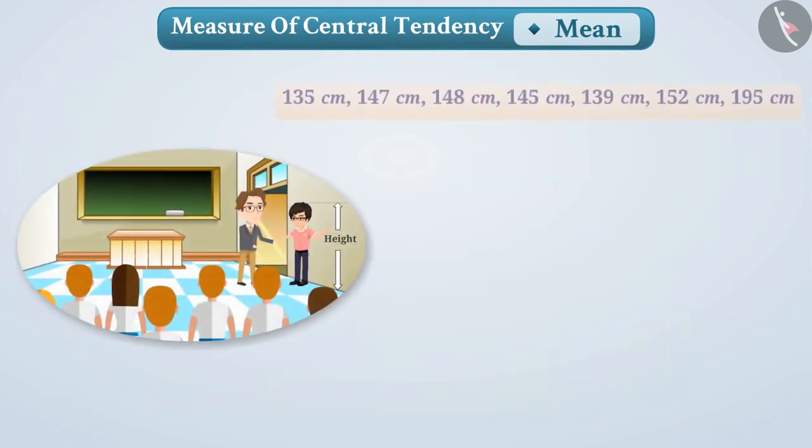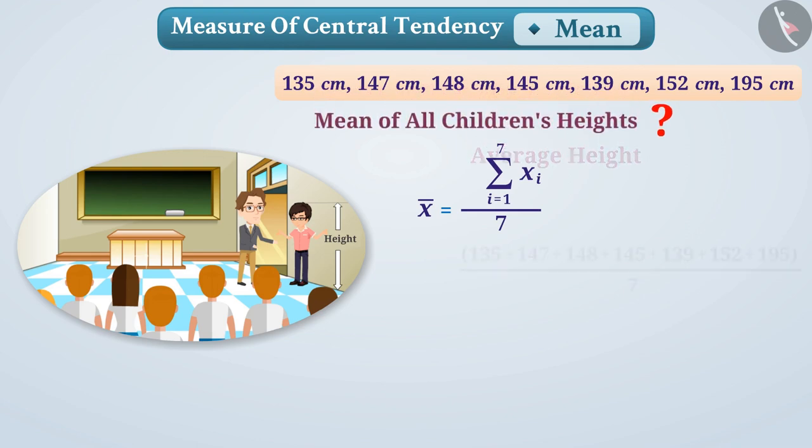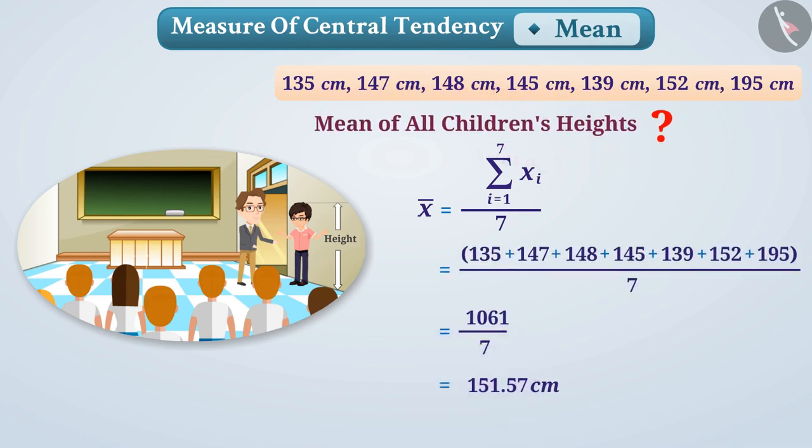For example, here are the heights of some children. To understand what their average height is, we have to find the mean of all children's height. The mean is the only measure of central tendency that takes into account the total value of the data. Therefore, if we require a scale showing the reflection of the total value, in that case, the mean would be a suitable measure.